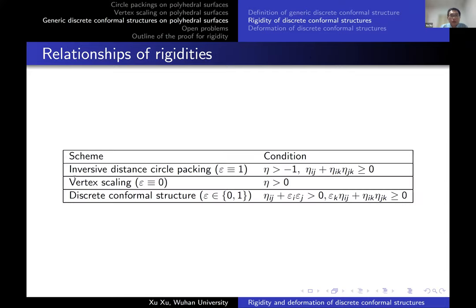Comparing with previous conditions: if all ε_i and η are zero, our condition reduces to η being positive, which is the vertex scaling case. If all ε are one, the condition reduces to the condition used to prove global rigidity of inversive distance circle packing. So our rigidity result unifies and generalizes the rigidity of vertex scaling and inversive distance circle packing.